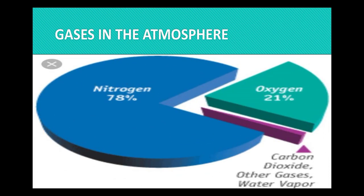Gases in the atmosphere. In atmosphere, 78% of air consists of nitrogen, 21% of oxygen, and the remaining 1% is other gases.